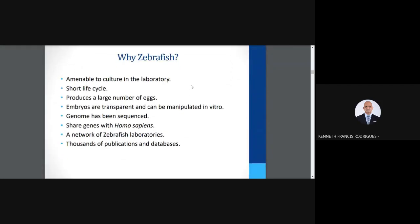Why do we select zebrafish as a model organism? As with most model organisms, this is related to convenience and time for conducting experiments. Zebrafish are amenable to culture in the laboratory, have a short life cycle, produce a large number of eggs, and have transparent embryos that can be manipulated in vitro. The genome has been sequenced and shares homologs with the human genome. There is a network of zebrafish laboratories sharing information via the ZFIN network, with thousands of publications, databases, and purebred lines with specific knocked-out genes.